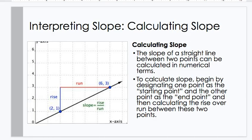How do we calculate the slope? The slope of a straight line between two points can be calculated in numerical terms. To calculate slope, begin by designating one point as the starting point and the other point as the end point, and then calculate the rise over run between these two points.